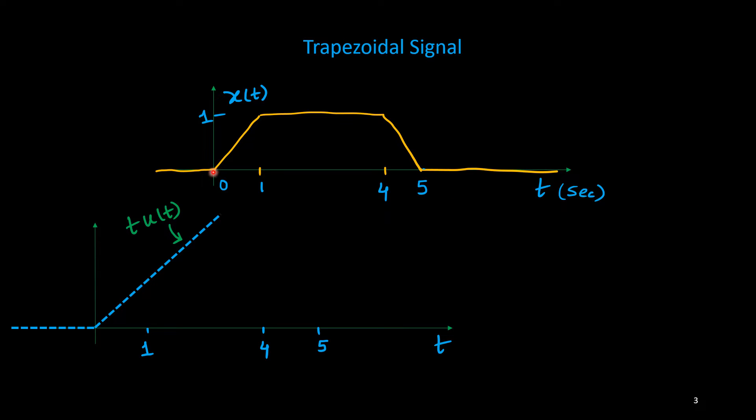So you see here 0 to 1 there is an increment, it is rising, so I'll put one ramp signal here. So this t·u(t) will give you one slope here, slope equal to 1.